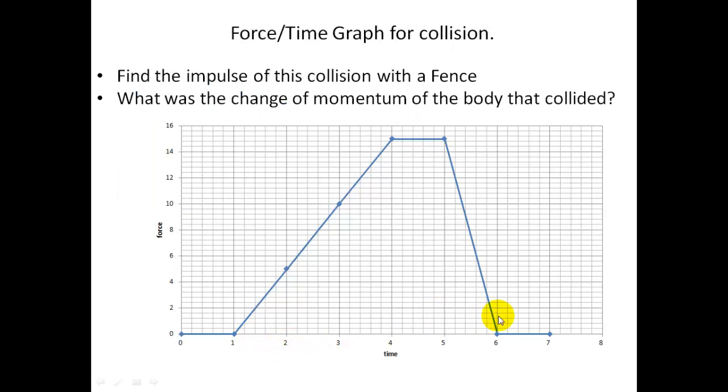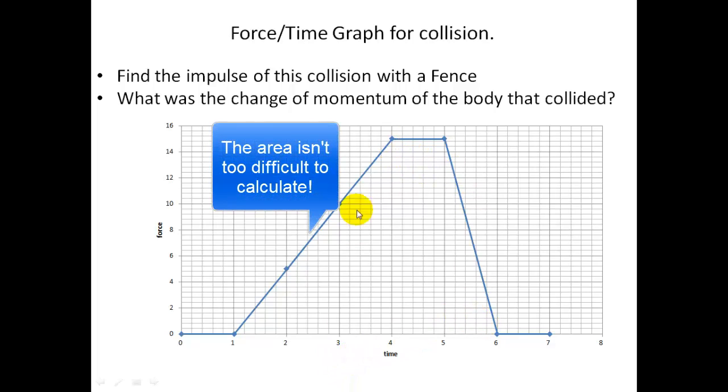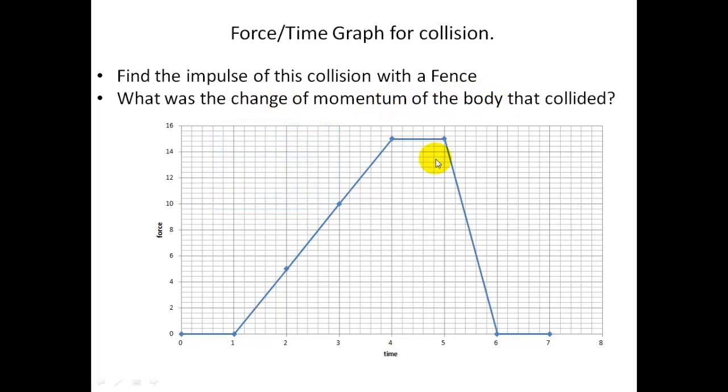Here again, you need to interpret this force-time graph. Find the impulse of this collision with the fence. So you need to find the area underneath all of this graph, and this will be equal to the change in momentum of the body that collided with it.